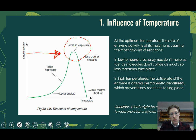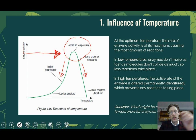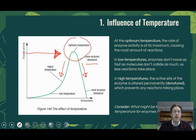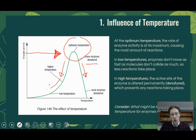At 37 degrees, we get the highest rate of reaction — the highest number of reactions occurring at any one time. If we go to a cooler body temperature, we see fewer reactions. Whereas if we go up in temperature past that optimum, we encounter a term called denatured. Denaturing is the permanent change in the active site of the enzyme, so it no longer looks the way it did before, and it can't bind to the substrate. When we lower the temperature, all that does is slow the enzyme down.